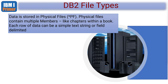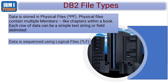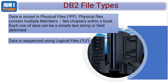Looking at file types in libraries or schemas: in the IBM i world we call our files 'physical files', which directly equates to a table in SQL. Unlike SQL, physical files can contain multiple members - like chapters within a book. Each row of data can be a simple text string or field-delimited. If we want to access or view data in a certain way, just like an index or view in SQL, we create things called logical files.